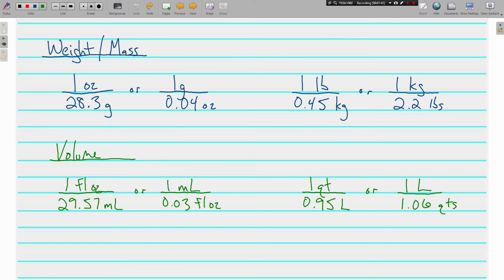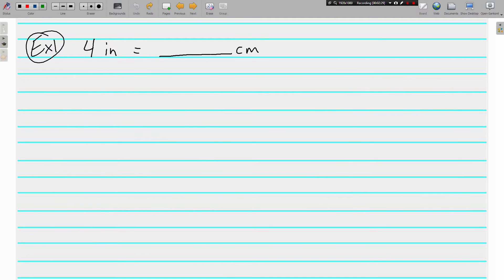Here are the other conversion rates that you need. For weight and mass: one ounce is 28.3 grams, one gram is 0.4 ounces. Then we have another one for pounds and kilograms. And volume or capacity - we've got fluid ounces into milliliters and we also have liters and quarts. Pause, rewind, take whatever time you need. Make sure all of these conversion rates are in your notes because you are going to need them for your practice. And when you're ready go ahead and hit play and we'll do some examples together.